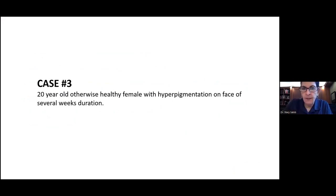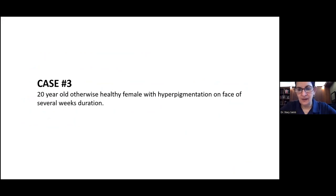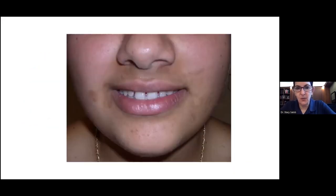Case three: this has come up at least three times since I started doing MAVEN consults — and it's a cool diagnosis to make. This is a 20-year-old otherwise healthy female who comes in with hyperpigmentation on her face of several weeks duration that just isn't going away. Let's describe this: hyperpigmented macules, but what's interesting is their shape — some are linear and streaky, some patchy, some are large irregularly shaped patches.